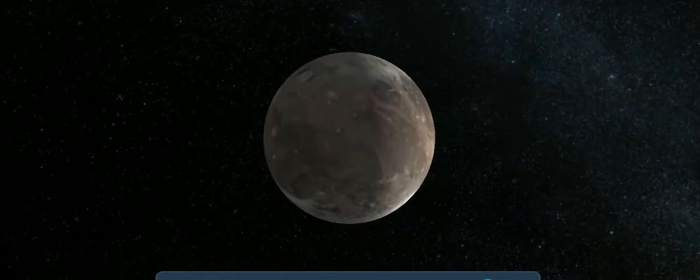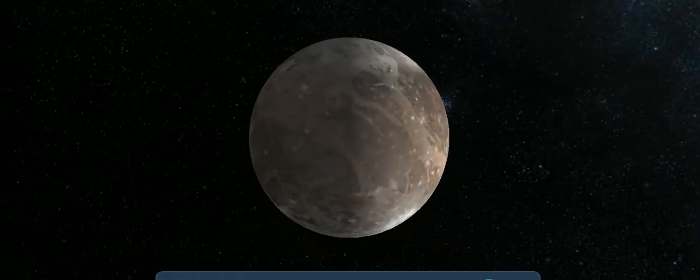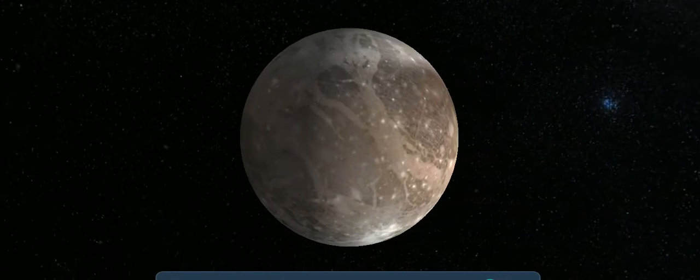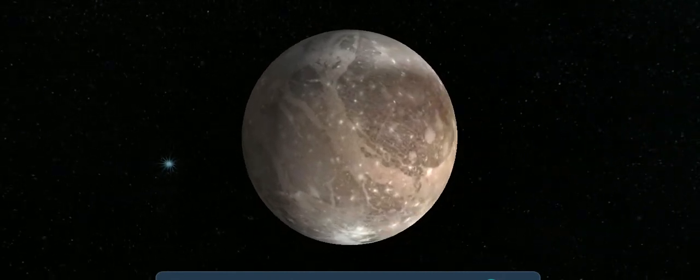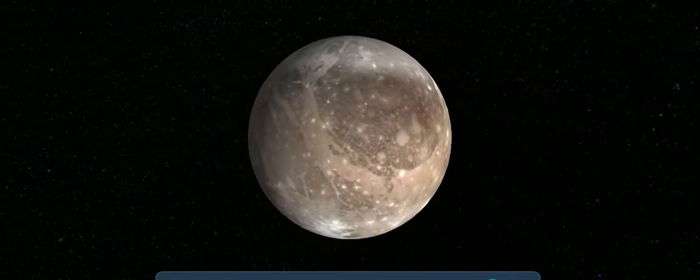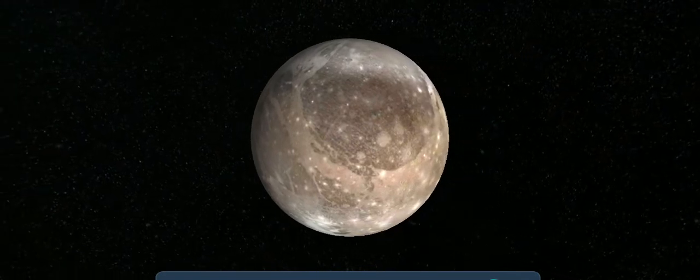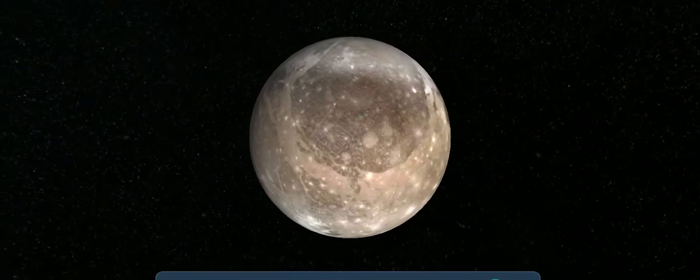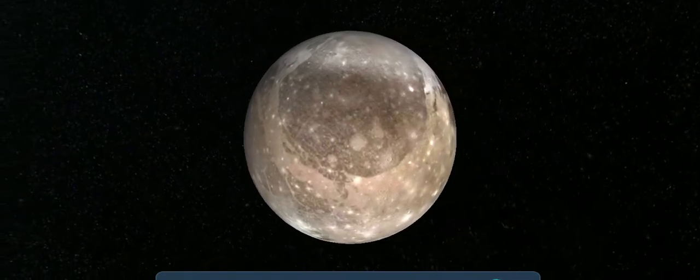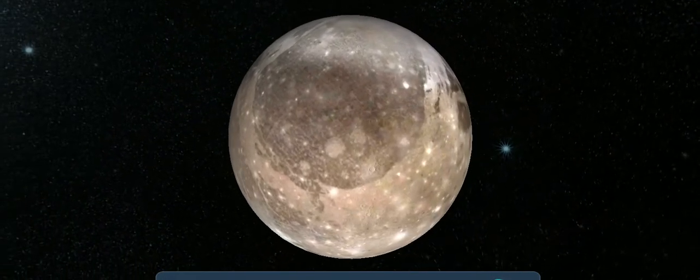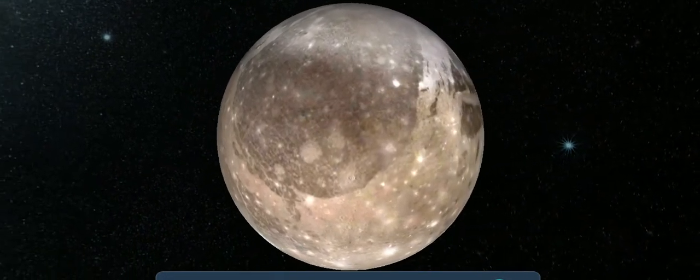Ganymede. Ganymede is the largest moon in the solar system. Its diameter is slightly greater than that of Mercury, but it is only half as dense as that planet. Its surface features dark areas with craters and younger, lighter, tectonically more active areas. The crust of Ganymede is composed of ice.